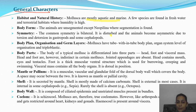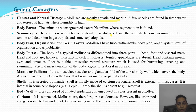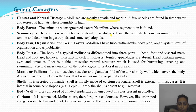Body parts: the body of a typical mollusc is differentiated into three parts — head, foot, and visceral mass. The head and foot are located on one side, while the visceral mass, which contains all the internal organs, is on the opposite side. Head and foot are however indistinct in certain molluscs; jointed appendages are absent.